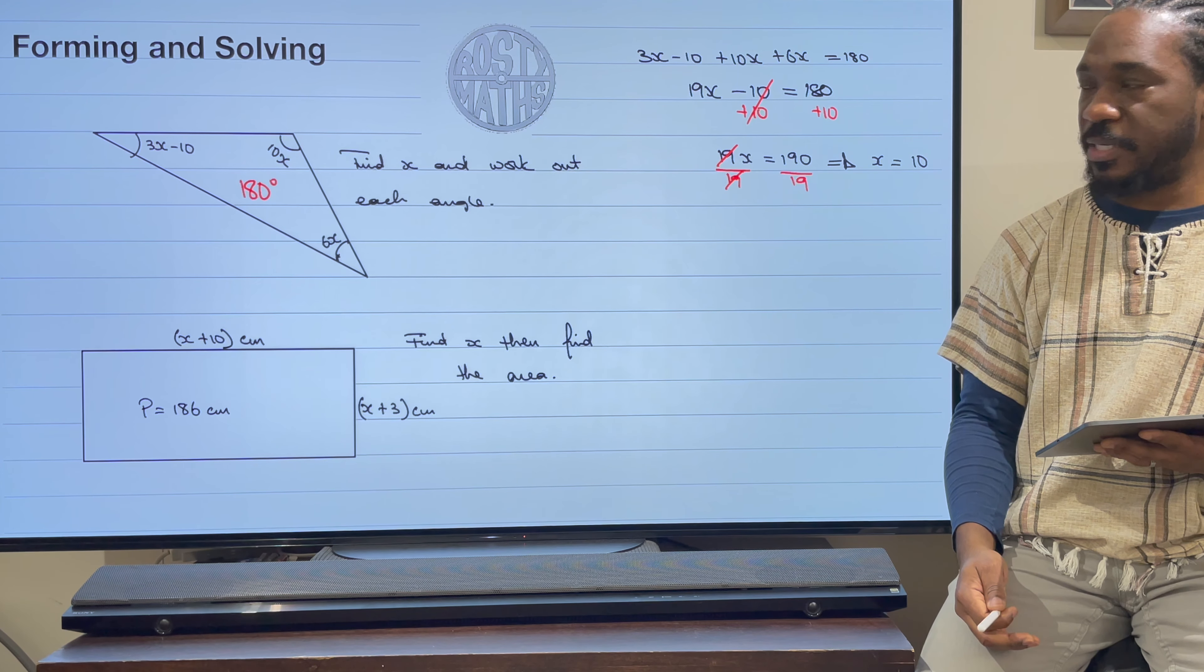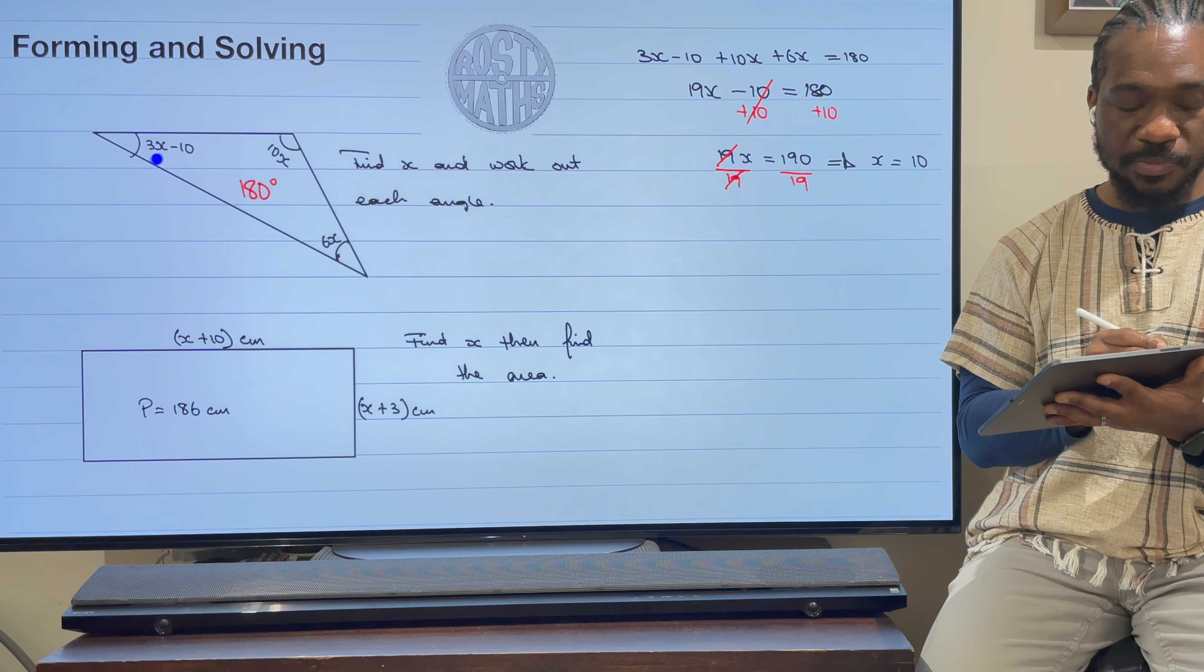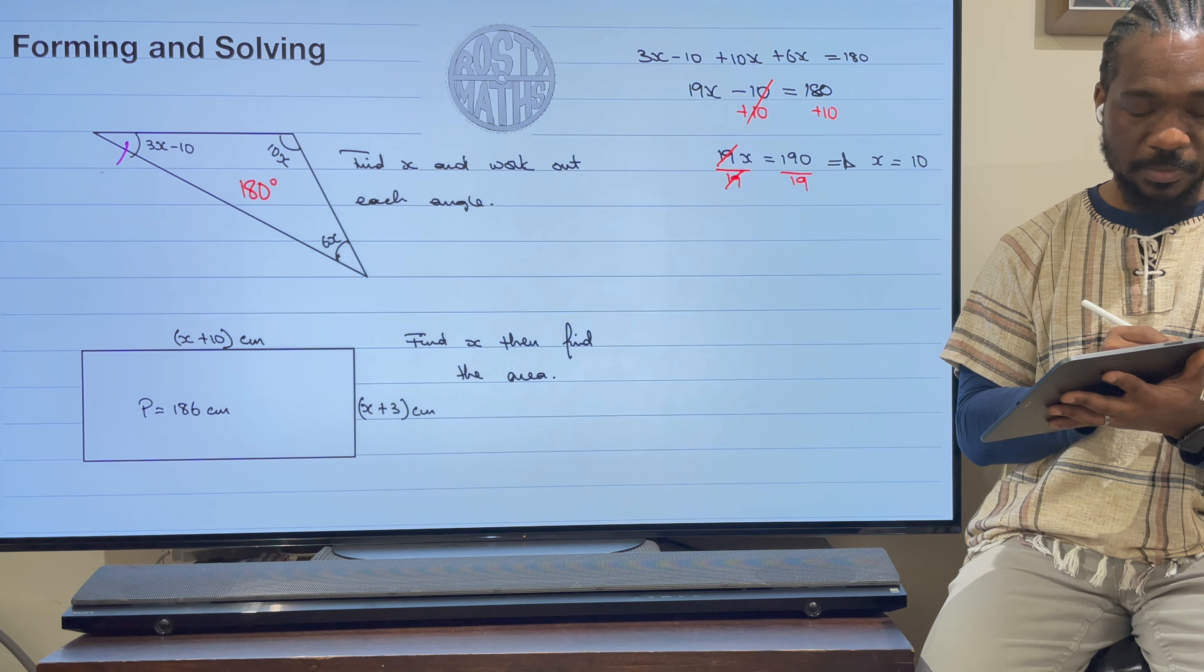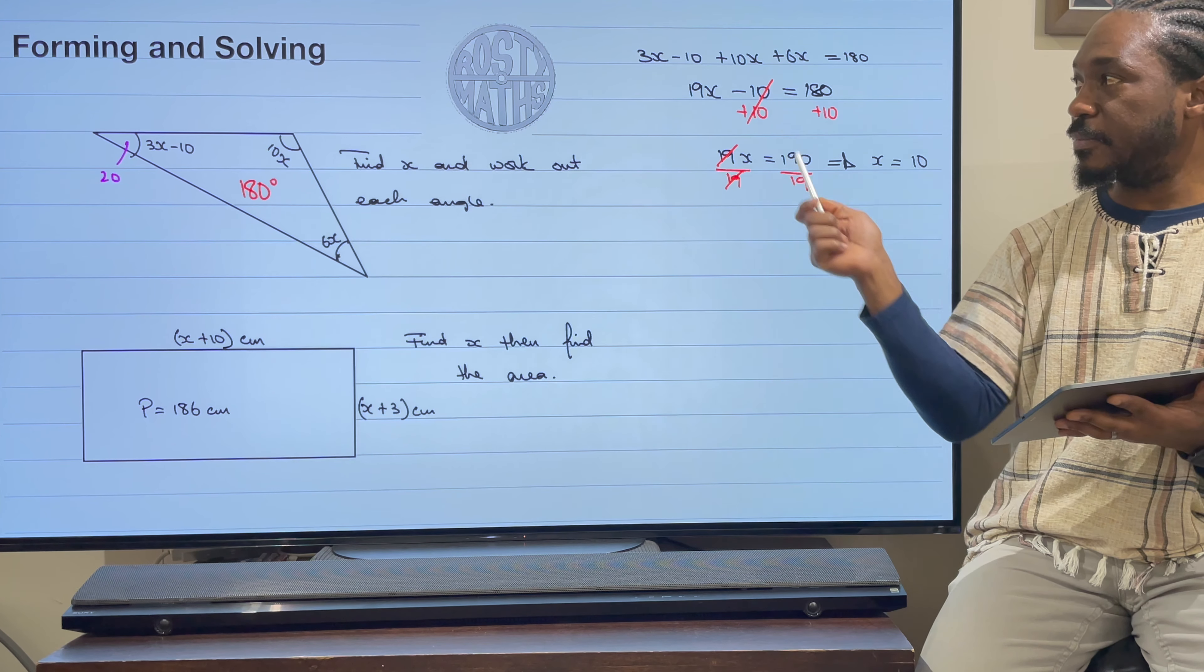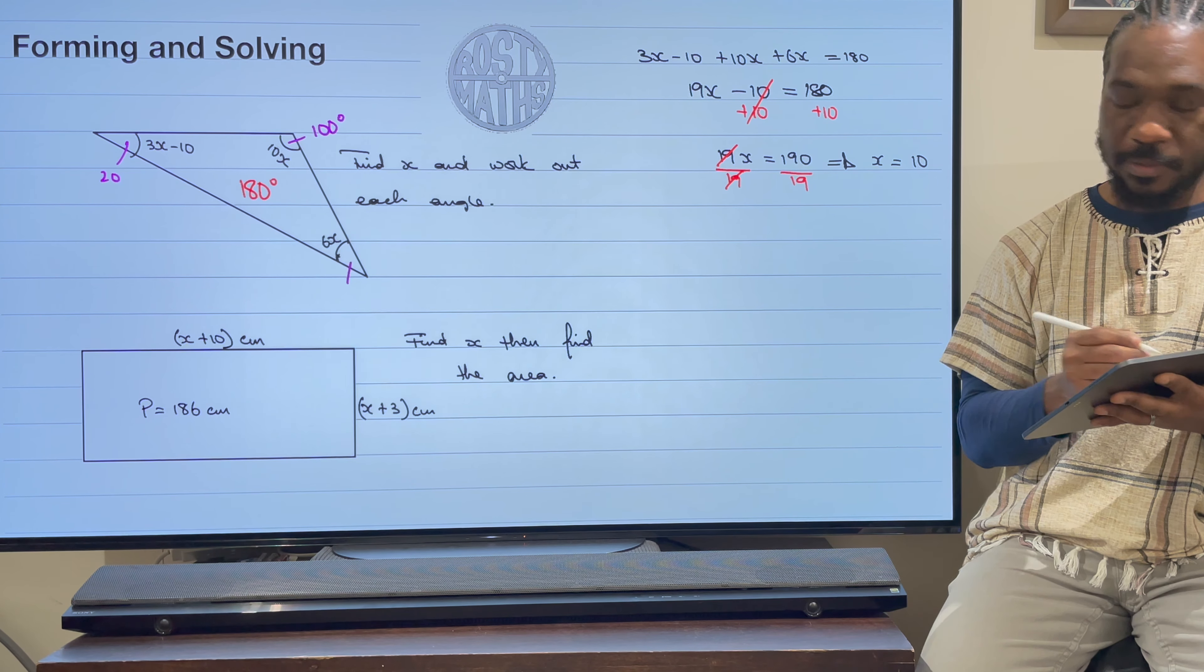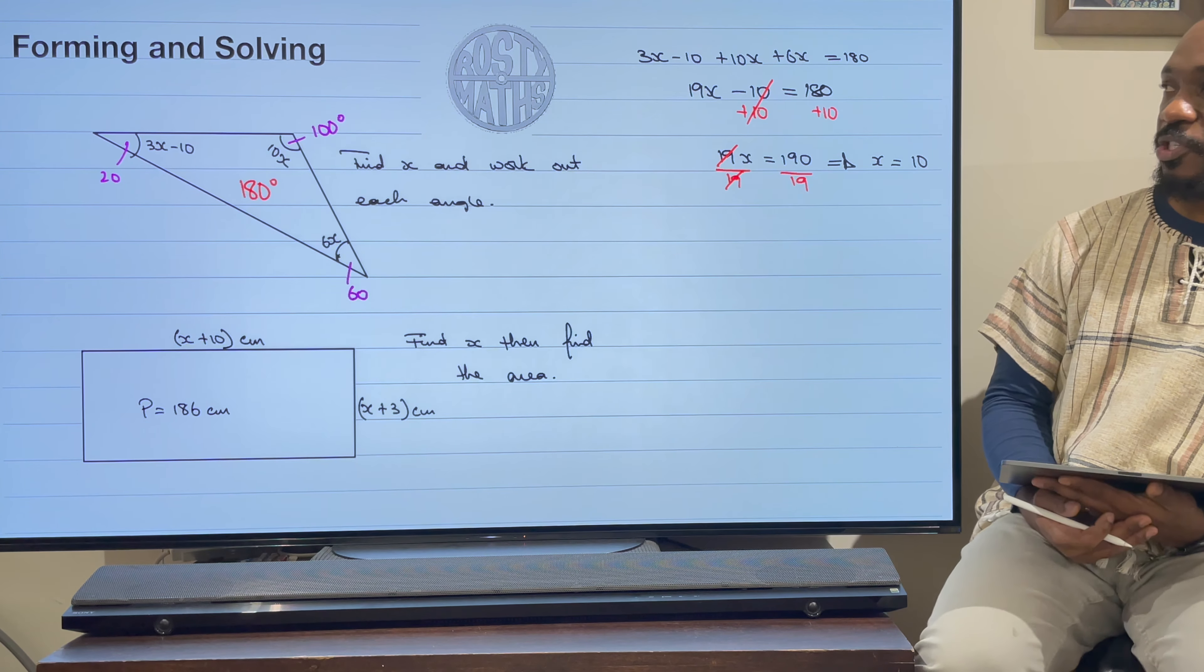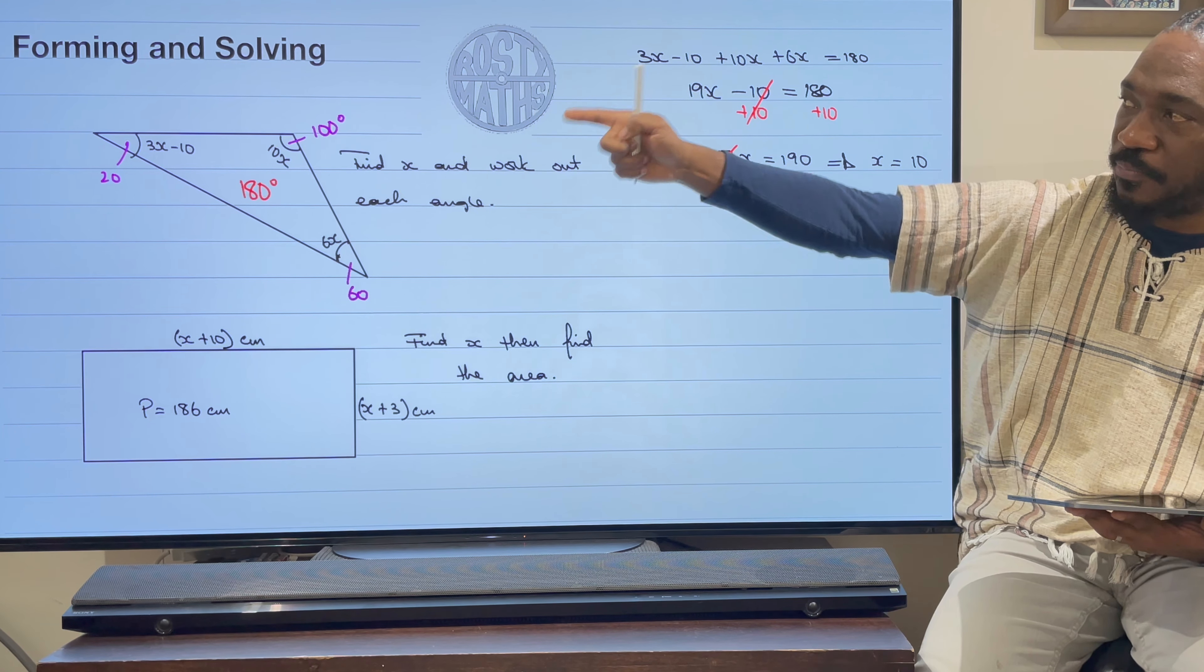Now I found x, so I've only answered one part of my question. Now I need to work out each angle. Since I know that x is 10, then that means this is 3 times 10 which is 30 take away 10 which is 20. So this angle here is 20 degrees. Since I know x is 10, this angle is 10 times 10, so 10 times 10 that's going to be 100. And last of all, this one down here is going to be 6 times 10, and 6 times 10 is 60. This question is now finished. If you do a mental check, 100 plus 60 plus 20 is 180, so I know my answer is correct.